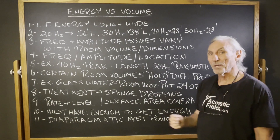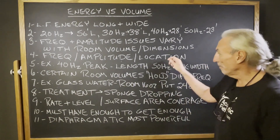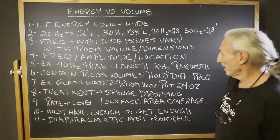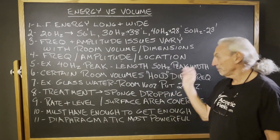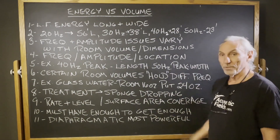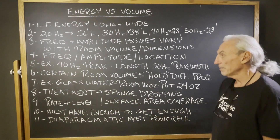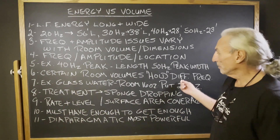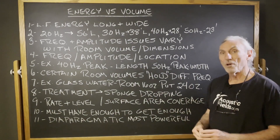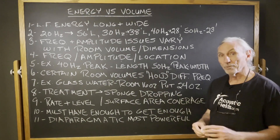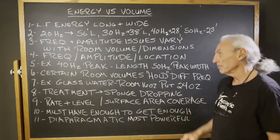For example, we could have a 40-cycle problem on the length, or a 50-cycle problem on the width — you just never know. You have to look at the ratios and see what you're working with. Certain room volumes hold different frequencies better. Obviously longer lengths work well for low frequency management, but it's the ratio of the width, height, and length that's really critical.